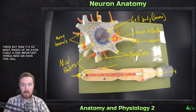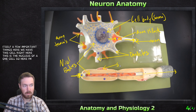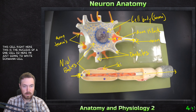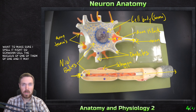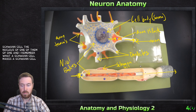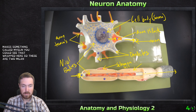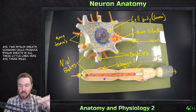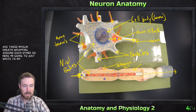We have this cell right here — this is the nucleus of a Schwann cell. Remember what a Schwann cell makes: it makes something called myelin. You can see that wrapped here — these are two myelin sheaths. Schwann cells produce the myelin sheath, and all these little lines here are those myelin sheaths wrapping around each other.